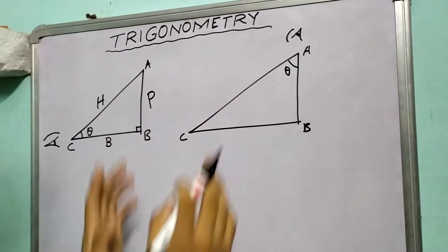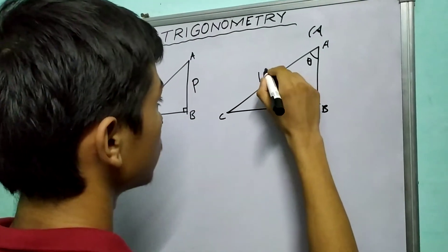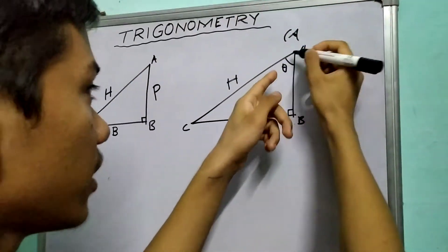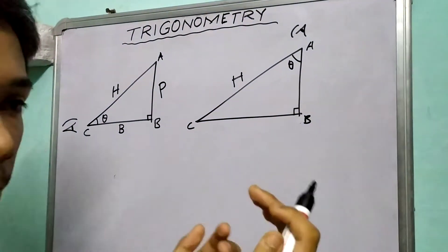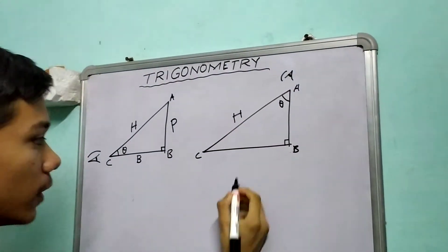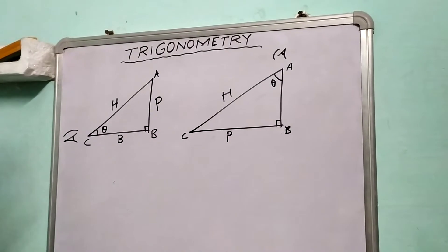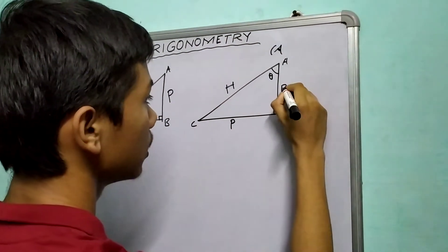Now the hypotenuse remains constant because it is the longest side, so we write it as H. Now if we look from theta's point of view, CB will appear to rise perpendicularly, right? So CB will be the perpendicular in this case. And what will be the base? Of course, AB will be the base.